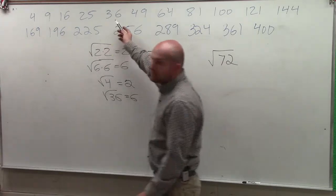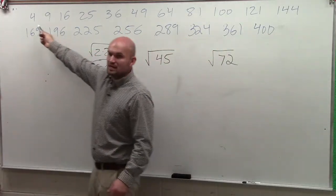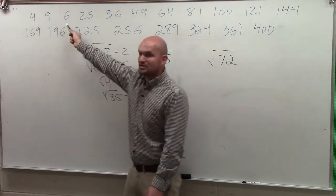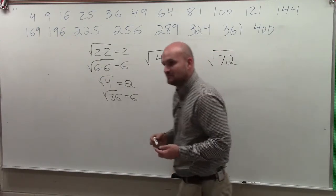So that's what I wrote up here for you guys, is I wrote up a whole bunch of square numbers. This is 2 times 2, this is 3 times 3, 4 times 4, 5 times 5, 6 times 6, 7 times 7, 8 times 8. And I went all the way up to 20 times 20, all right?